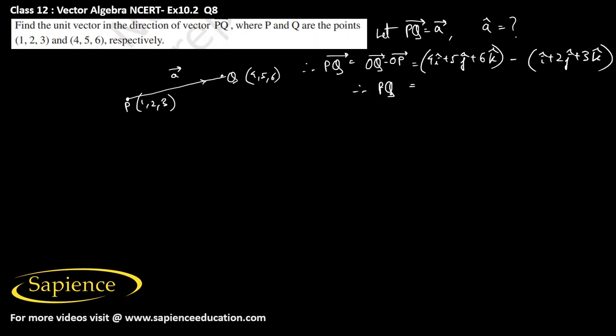Therefore PQ vector will be equal to 4 minus 1 that is 3I cap plus 5 minus 2 that is plus 3J cap and plus 6 minus 3 that is plus 3K cap.